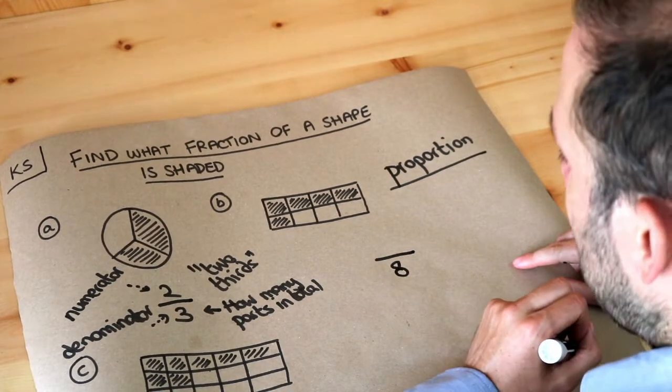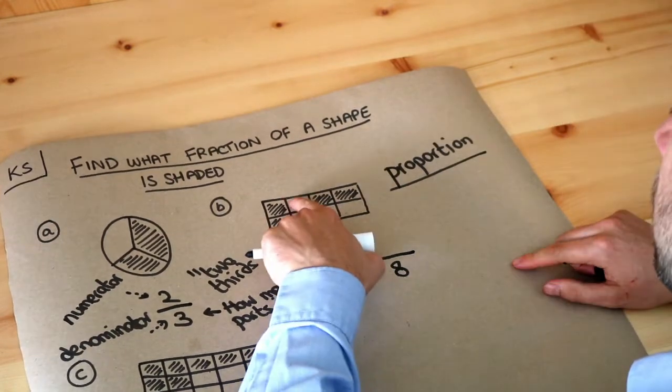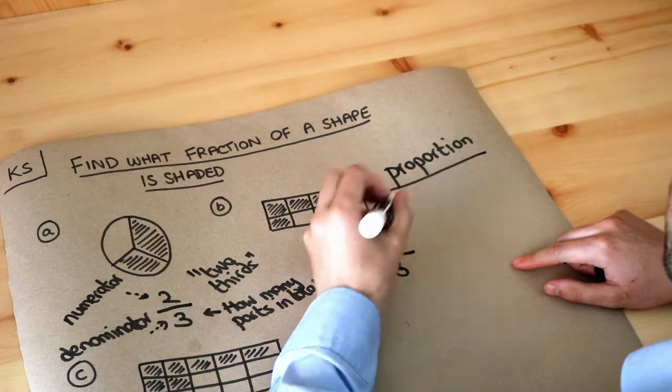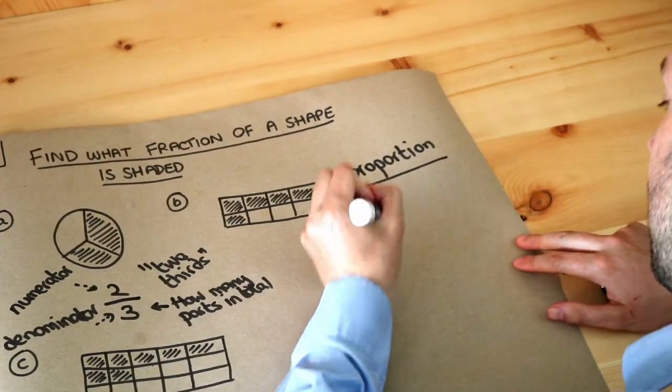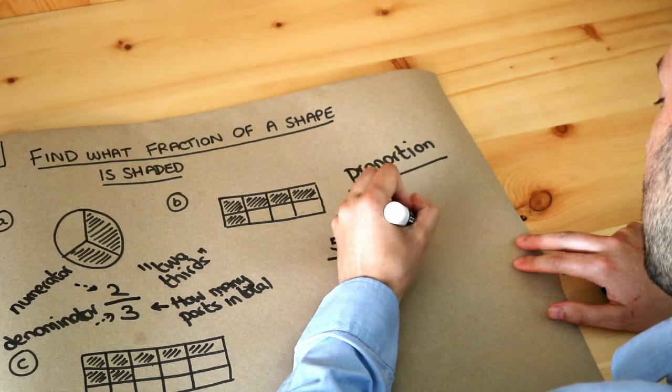And how many of those parts do we have? How many have we shaded? One, two, three, four, five. So we have five of those parts. So the fraction we would say as five-eighths.